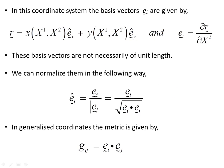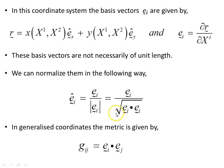These basis vectors are not necessarily of unit length. We can normalize them by taking their modulus or absolute value. In generalized coordinates the metric is given by the standard expression covered in numerous other videos on this channel.